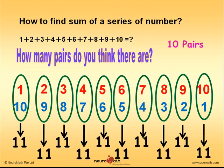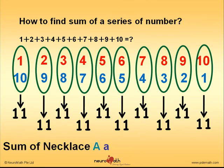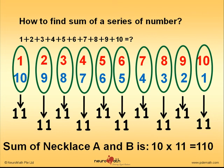So, if we have 10 pairs of numbers and each pair has a sum of 11, the sum of Necklace A and Necklace B is going to be 10 times 11. That gets us 110.